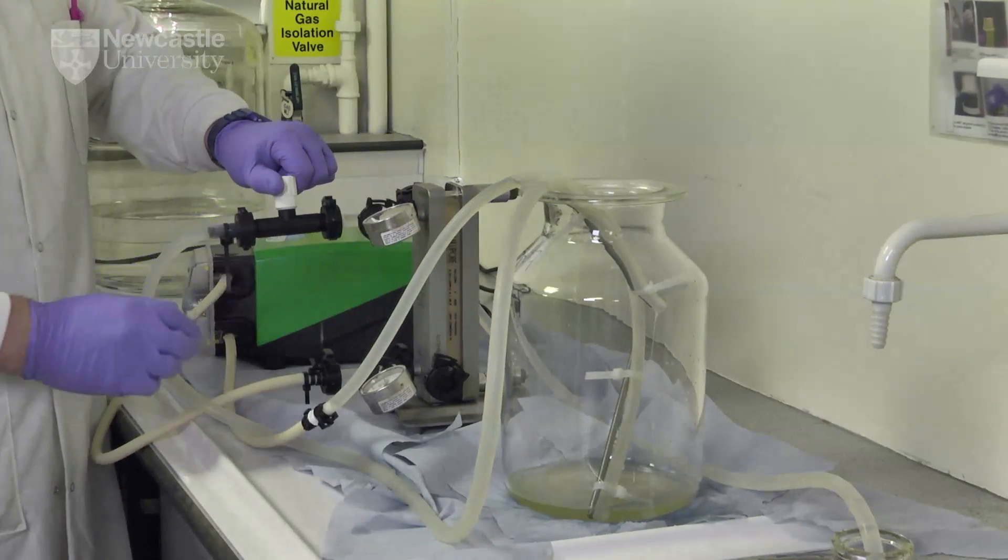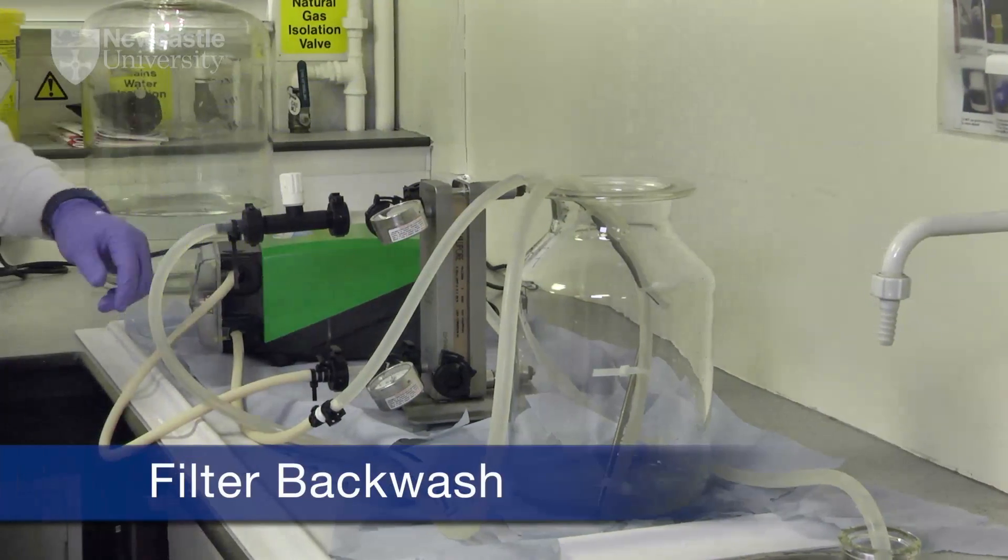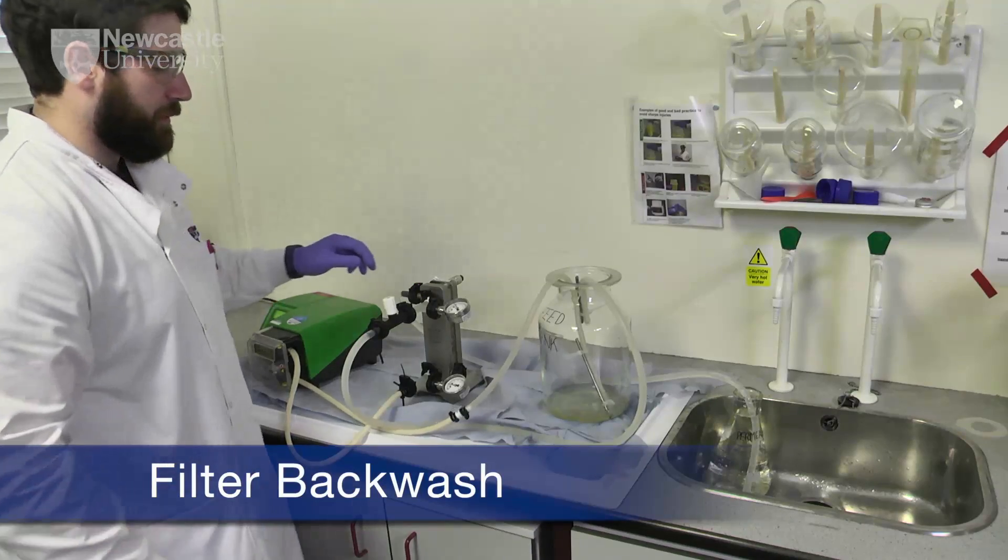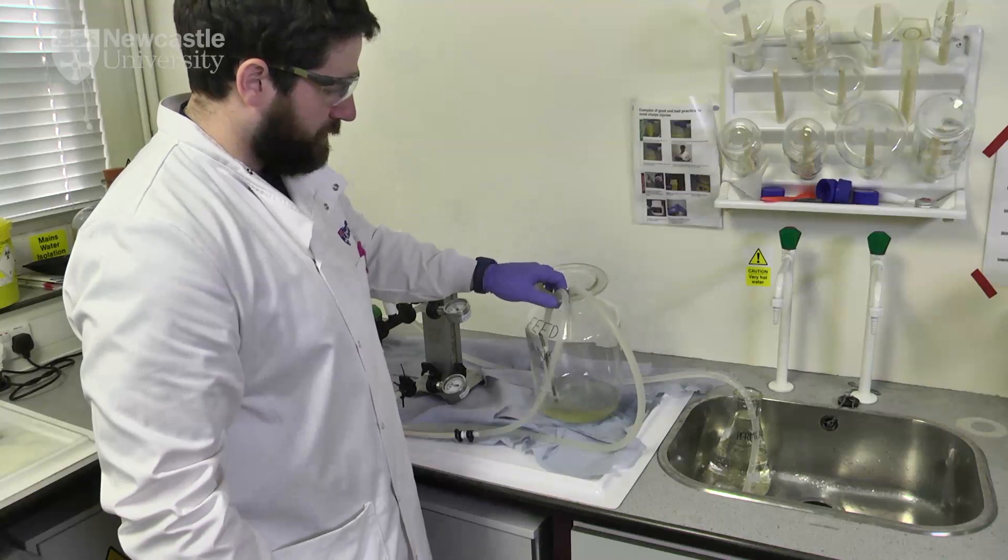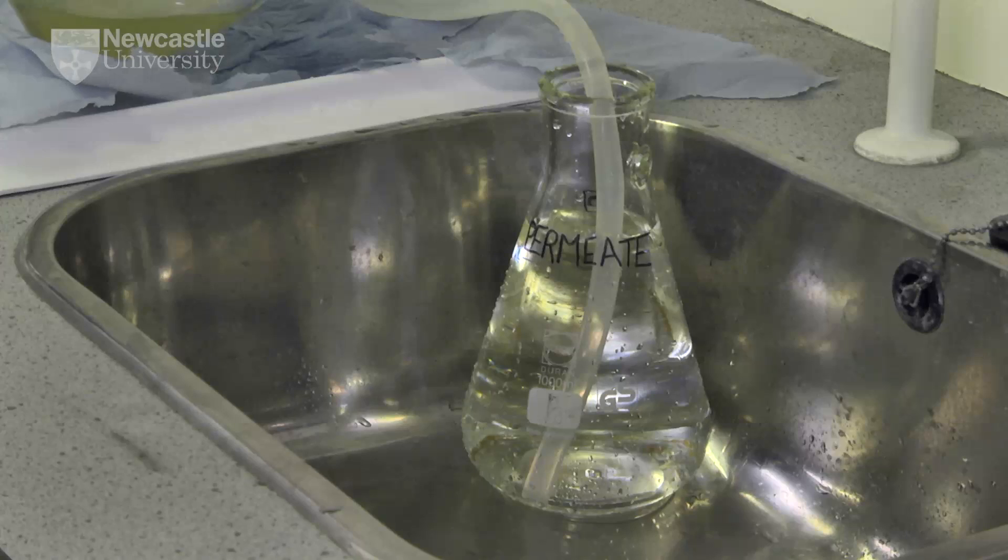The flow direction of the pump is then reversed, the retentate valve is closed and the pump is switched on, drawing approximately 500 millilitres of permeate back through the TFF manifold.